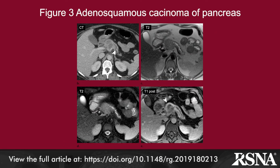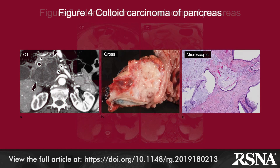Adenosquamous carcinoma is a mixed tumor histologically containing at least 30% squamous differentiation, associated with a poorer prognosis than pancreatic ductal adenocarcinoma. These tumors have a predilection for the pancreatic body and tail and tend to be larger at presentation. On CT, they appear as large, round, lobulated masses with central necrosis and progressive enhancement of a fibrous capsule. High signal intensity on T2-weighted images, attributed to mucoid or necrotic components, can differentiate these from pancreatic ductal adenocarcinoma.